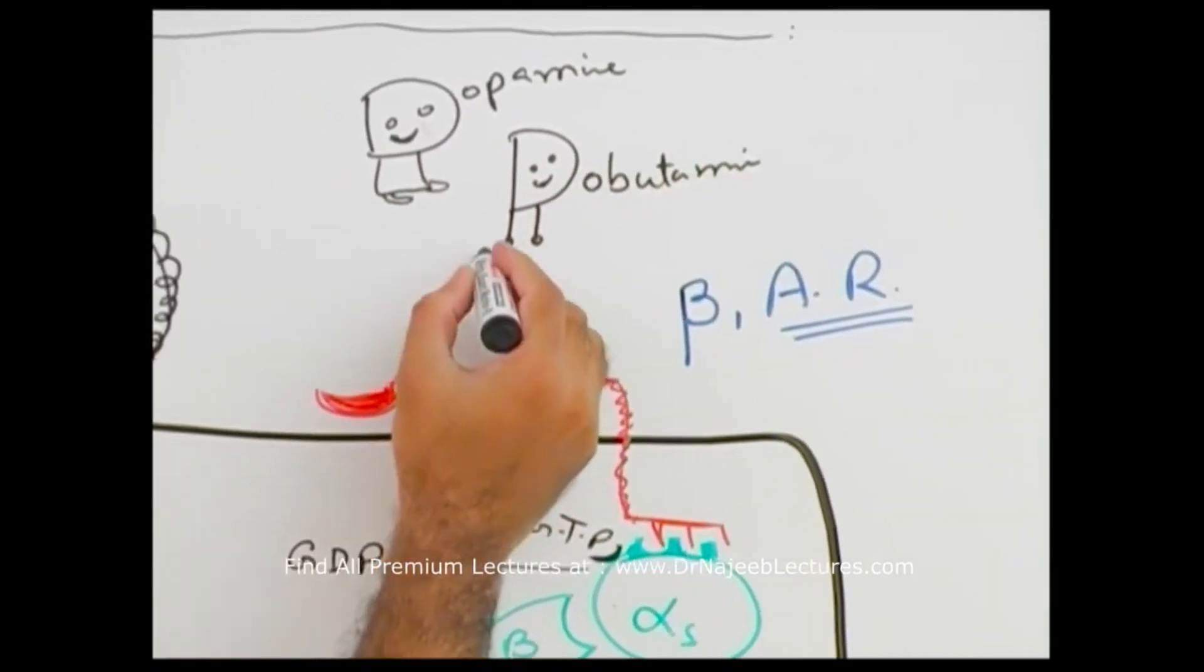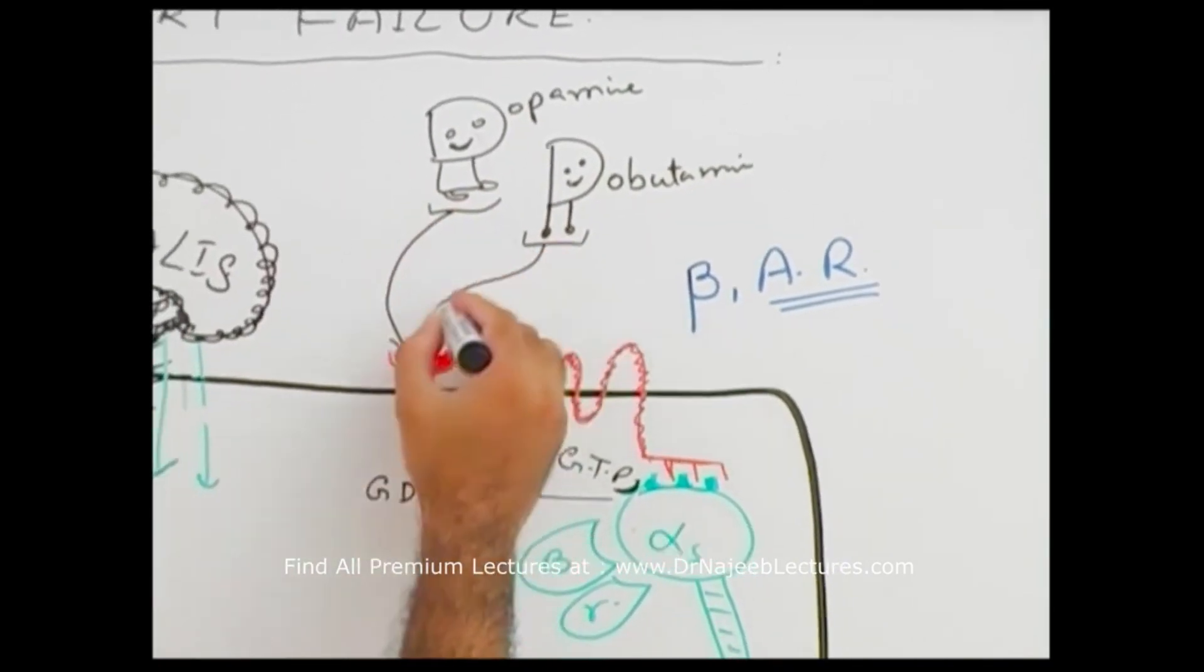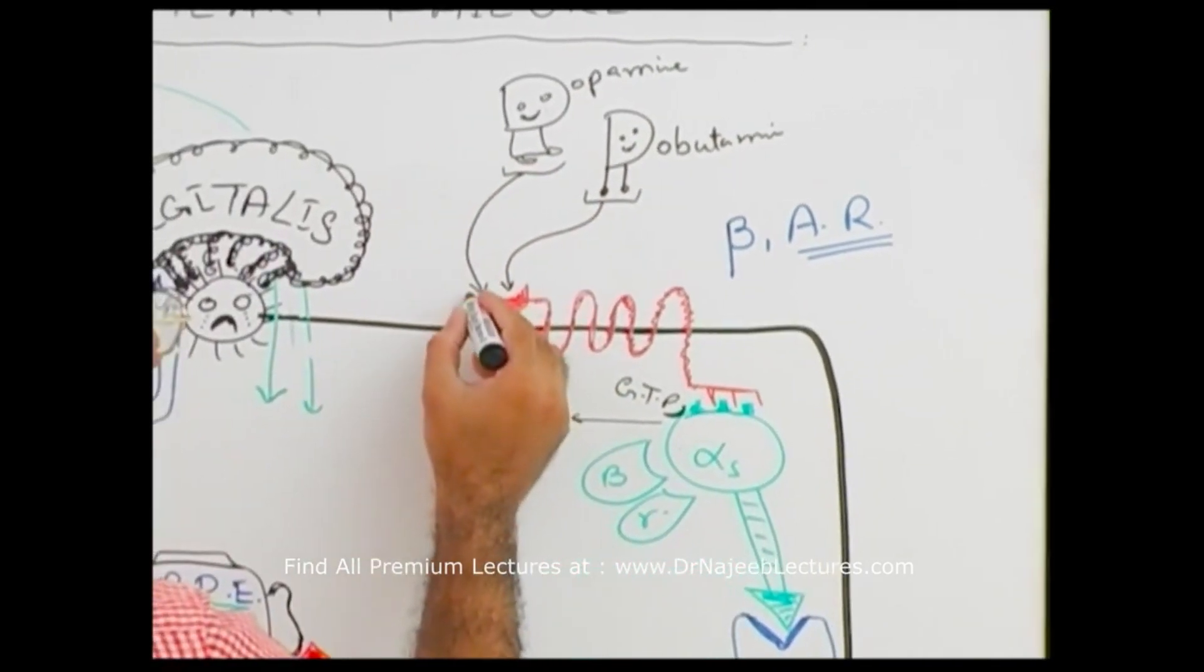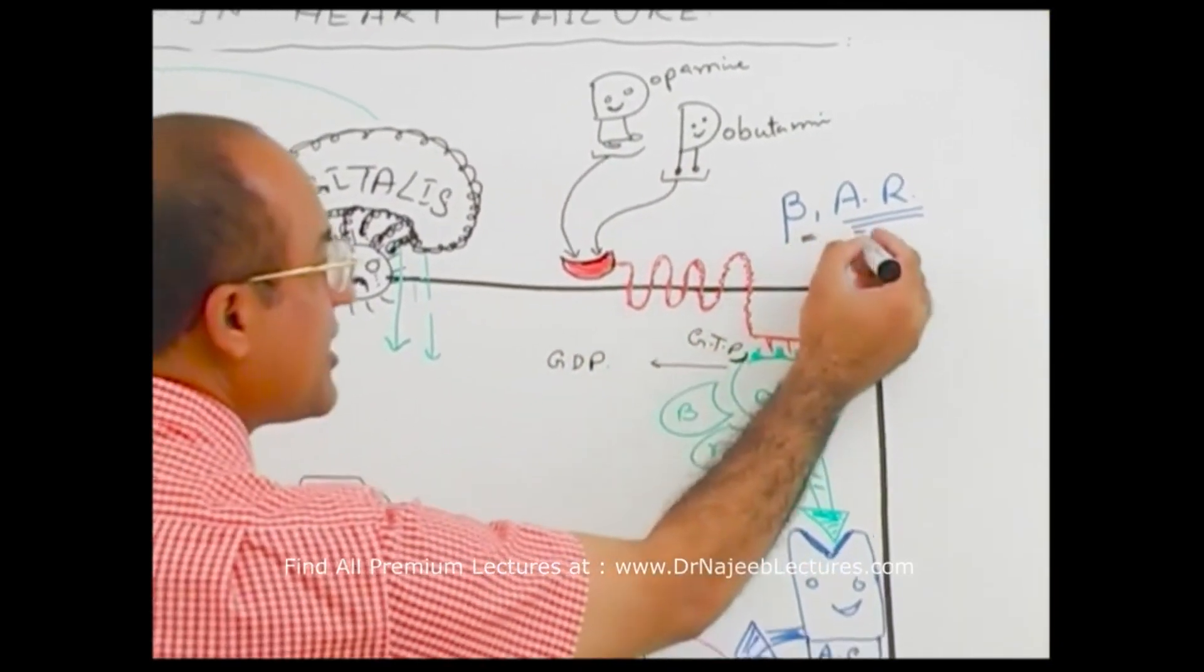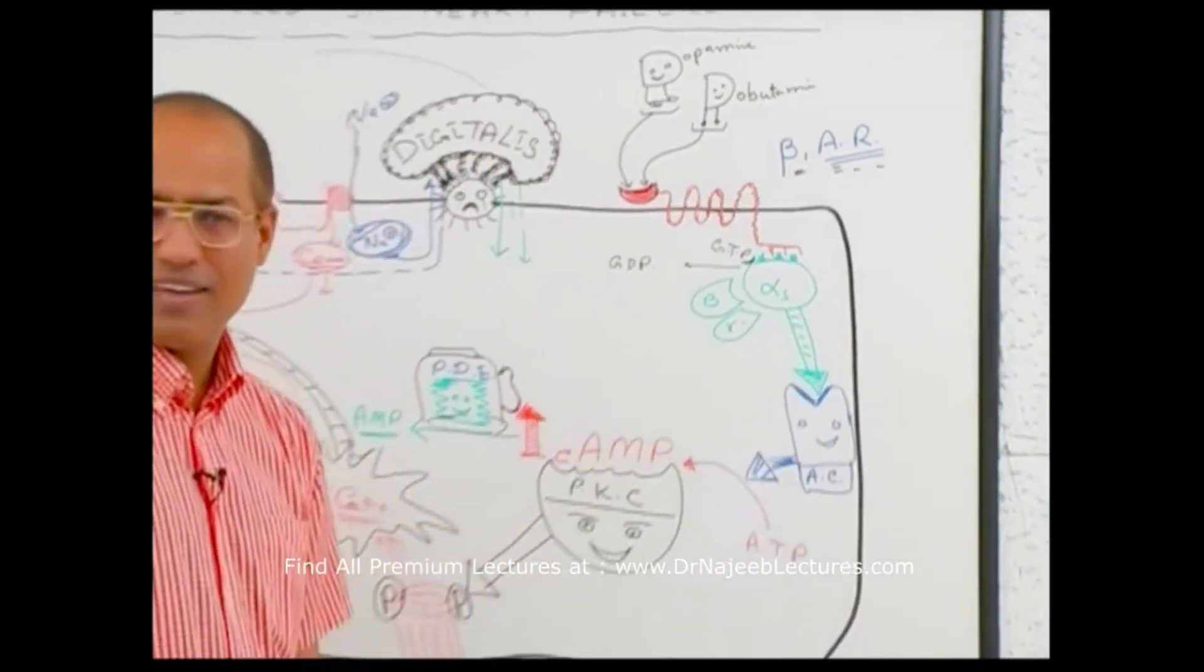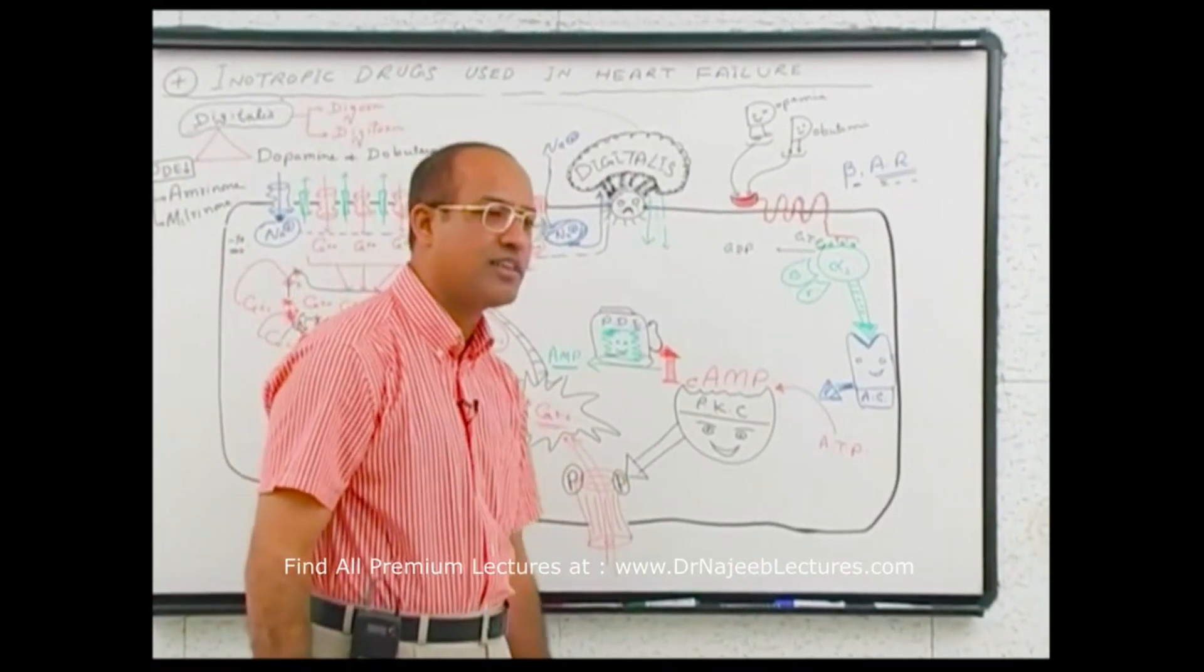It's easy to understand that both of them actually stimulate this point. They bind with beta-1 adrenergic receptor. Dopamine and dobutamine are beta-1 adrenergic receptor stimulators.